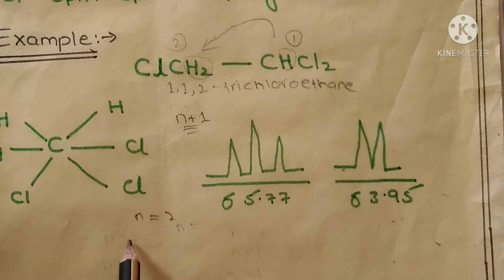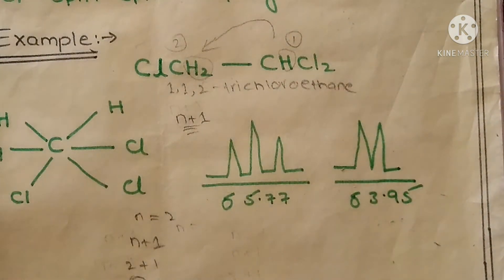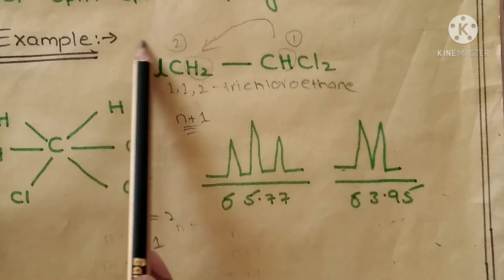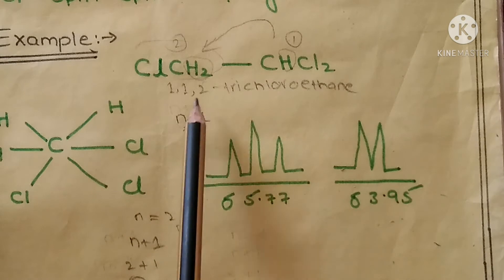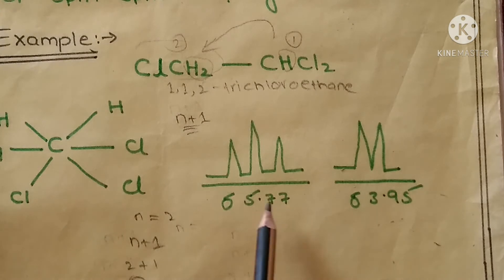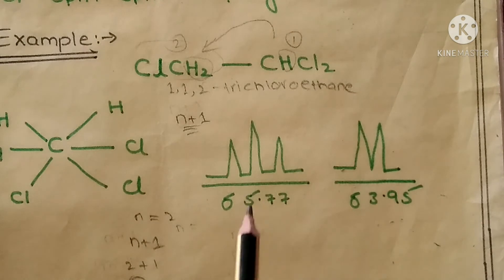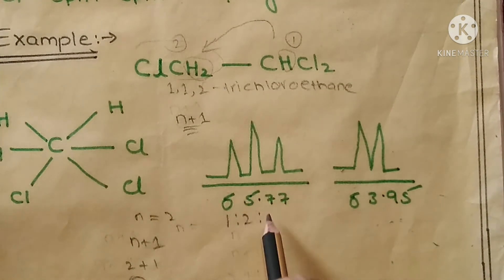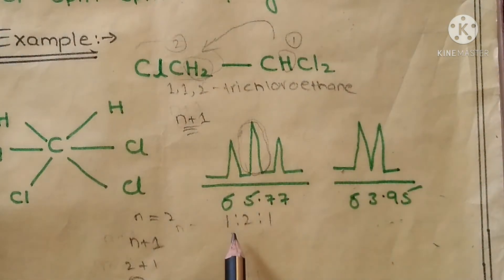So if we put n equal to 2 into the n+1 rule, then we get 3. So this compound has 3 peaks. Here you can see clearly that this compound has 3 peaks. The chemical shift value for this compound is 5.77, and the intensity is 1:2:1. The middle peak has high intensity.